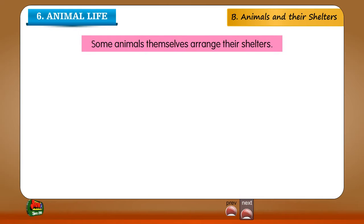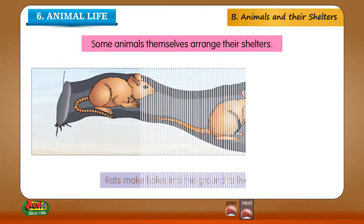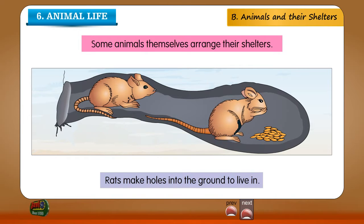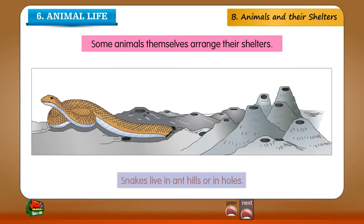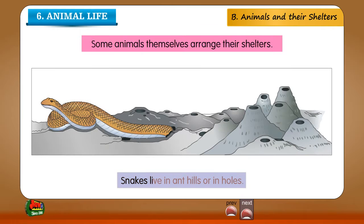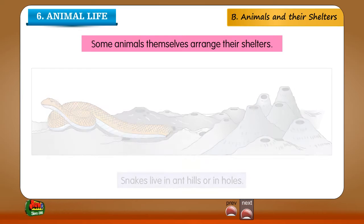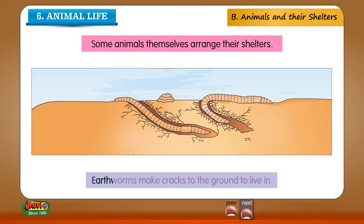Some animals themselves arrange their shelters. Rats make holes into the ground to live in. Snakes live in ant hills or in holes. Earthworms make burrows in the ground to live in.